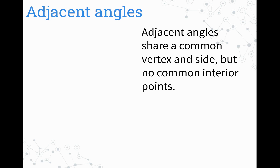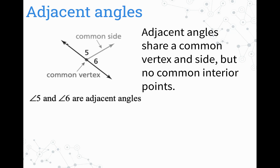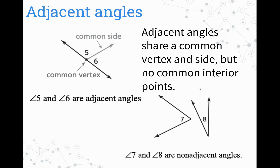Let's talk about the word adjacent. Adjacent angles share a common vertex but no common interior points. Here we have a line with two angles, angle five and angle six. Angle five and angle six are adjacent angles — they share one common side and one common vertex, but they don't have any interior points in common; they don't overlap. Adjacent means right next to. In geometry, adjacent means sharing a common side. Angle seven and eight? Those are non-adjacent — they do not share a common side and are not touching each other.